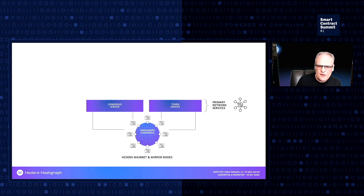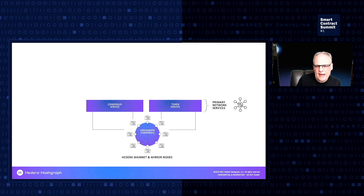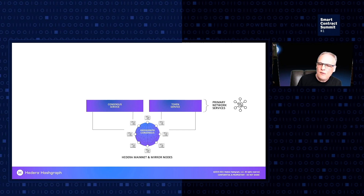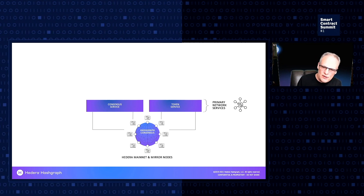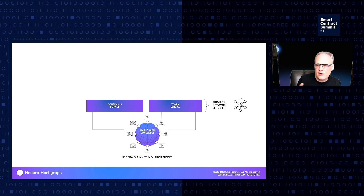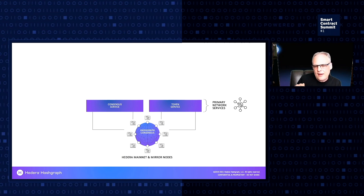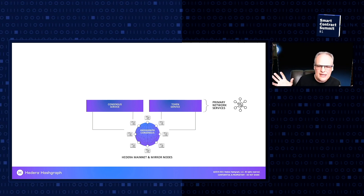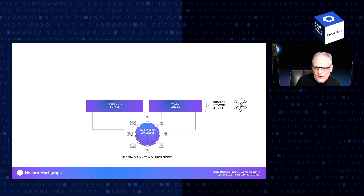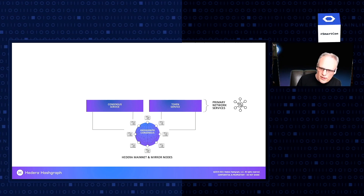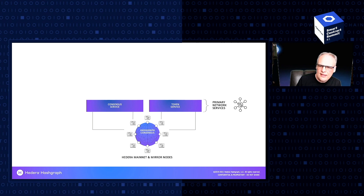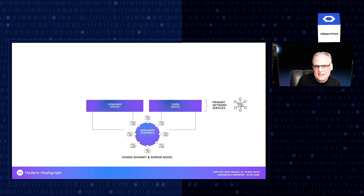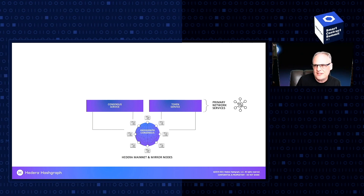This is the architecture. At the bottom, we have the nodes of the network being run by our council members — that will scale. We will add community nodes, node operators that are not on the council, and then the following step will be to allow anonymous nodes. We intend to scale to many hundreds or thousands of nodes. The network has two primary services being used: the consensus service and the token service.